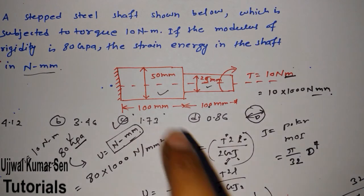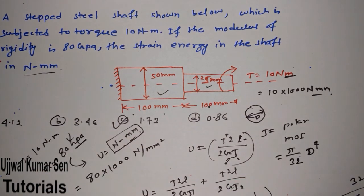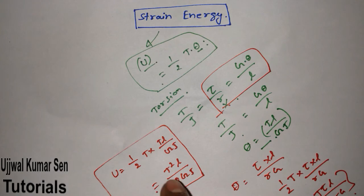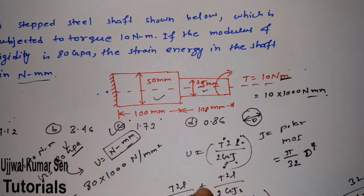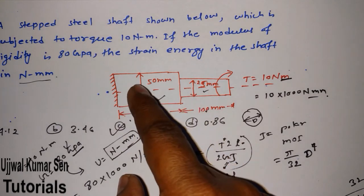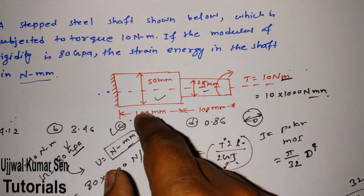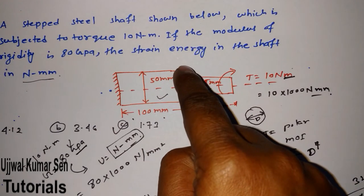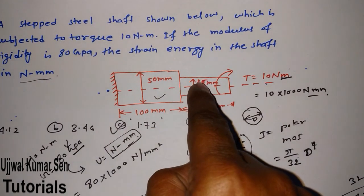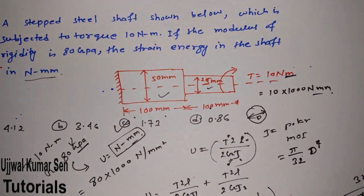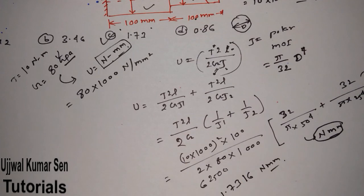To review: we looked at the question, identified the given values, derived the formula by combining the torsion equation with the basic strain energy formula, and obtained U = T²L/2GJ. Because the shaft has two steps with different diameters (50 mm and 25 mm), we applied the formula to each section separately and added them. If both steps had the same diameter, we could have just calculated one and multiplied by two.